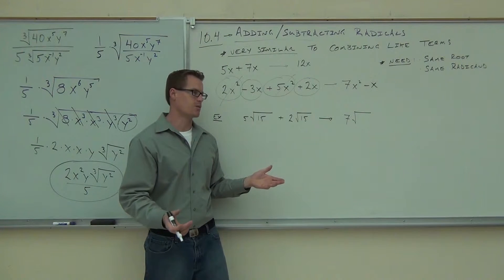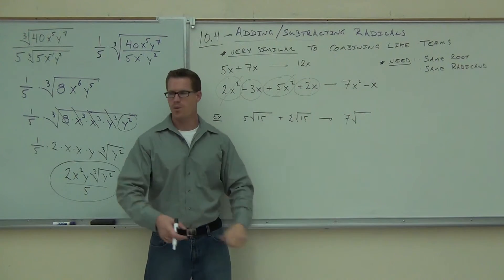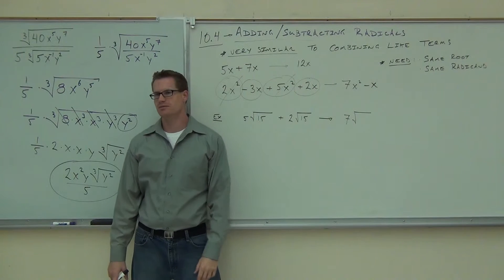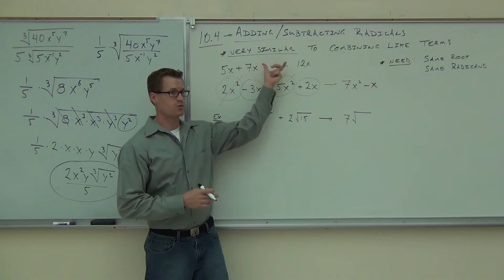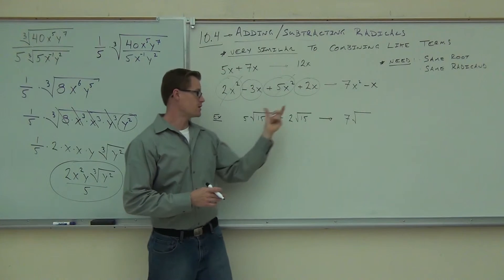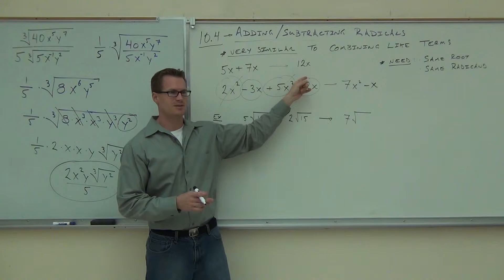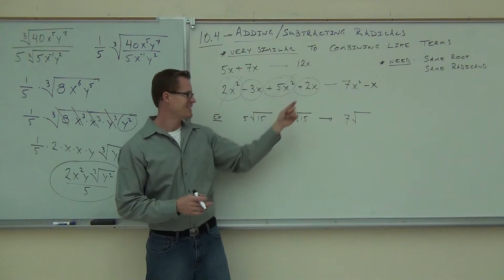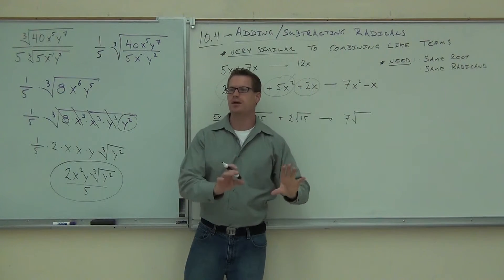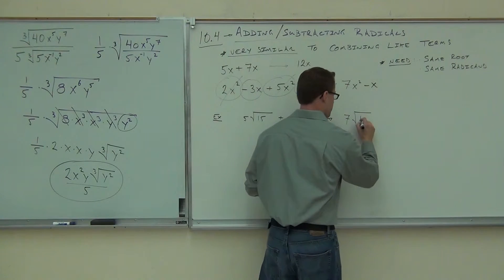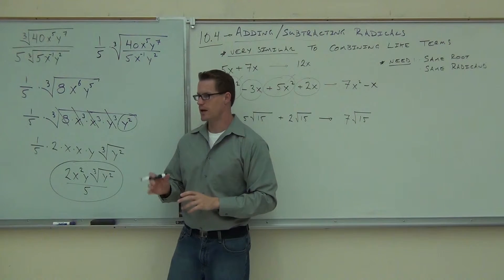It does not magically change to 30. That's a big mistake that people make — they think addition and go '7 root 30.' No, we can't do that. You're adding like you do with like terms. You have 5 of this thing, you have 2 of this thing, you get 7 of that same thing — still root 15. You don't change the root and you don't change the radicand when you're adding.